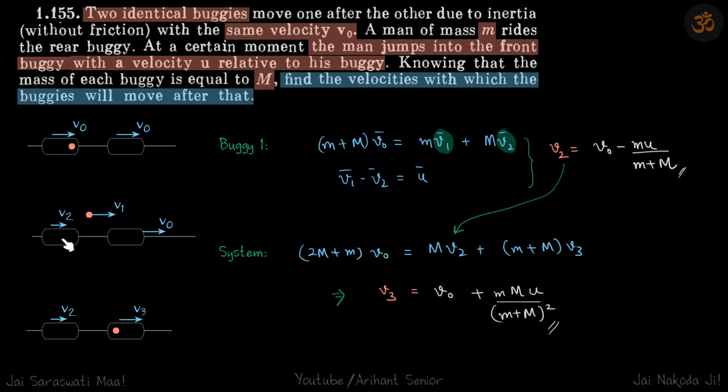When he gets into the first one, we need to find what are the velocities of these buggies. For buggy one, we will do momentum conservation when the man is inside and when the man has jumped into the air.